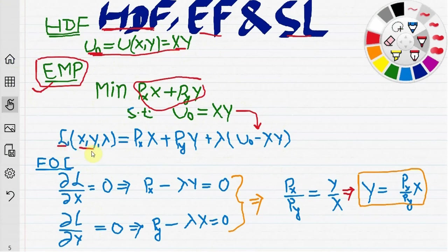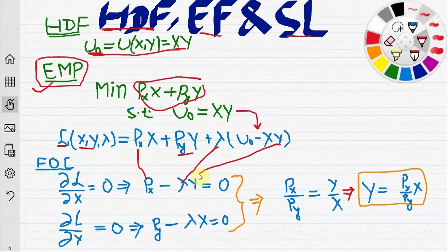When we differentiate L with respect to x we get px minus lambda times y equals zero. Similarly, if we differentiate L with respect to y we get py minus lambda times x equals zero. On division, we get px over py equals y over x.